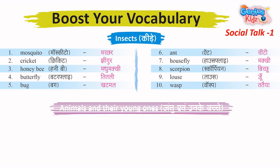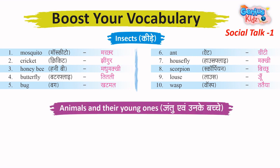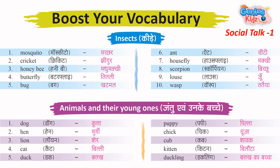Animals and Their Young Ones – Jantu aur unke Bachche. 1. Dog – Kutta. Young: Puppy – Pilla.